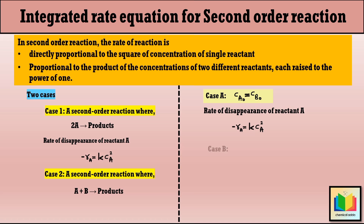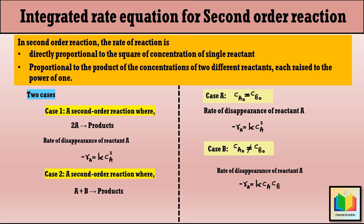Case B is if the initial concentrations of both reactants A and B are not equal — that is, if CA0 ≠ CB0 — then -rA = kCA·CB, meaning the reaction rate is proportional to the product of the concentrations of both reactants. In short, there are three cases for second order reactions, and for each case we should derive an integrated rate equation.